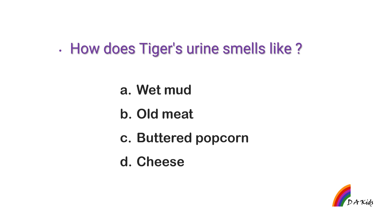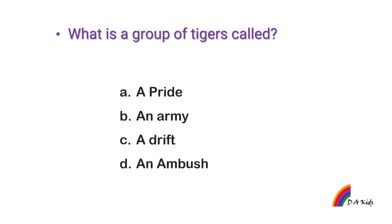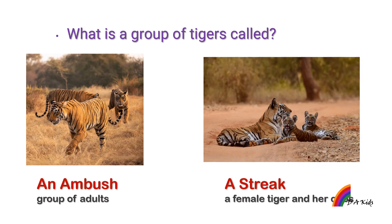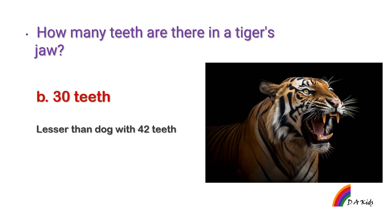How does a tiger's urine smell? Buttered popcorn! What is a group of tigers called? If it is a group of adults, it's called an ambush. If it is a female tiger and her cubs, it's called a streak. How many teeth are in a tiger's jaw? 30 teeth — fewer than a dog, which has 42 teeth.